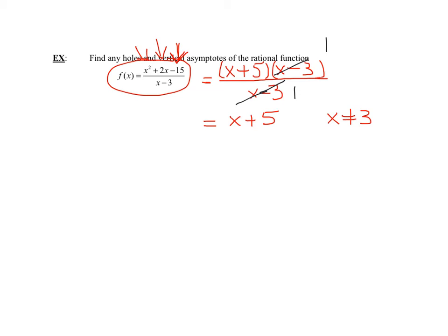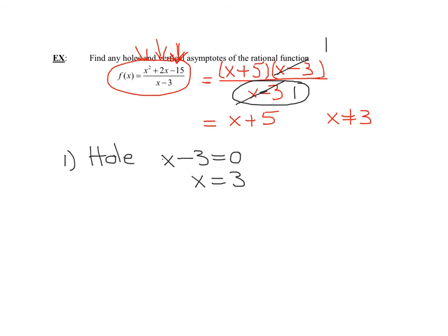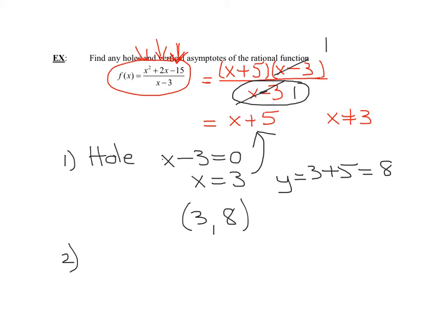Do I have any holes or vertical asymptotes? Holes occur when a factor totally reduces out of the denominator — and that happened here. So I have a hole when x minus 3 equals zero, or x equals 3. To find the y-coordinate, I plug 3 into the reduced function: y equals 3 plus 5, which equals 8. The coordinates of the hole are (3, 8). As for vertical asymptotes, there is no denominator left after reducing, so there are no vertical asymptotes.